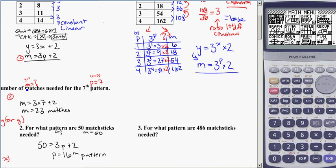So again we're looking for m, which is our y, and we're trying to find the number of matches m using the seventh pattern. So my rule, I'm going to use my substitution, m is equal to 3 to the power of 7, because p is now 7, times 2.